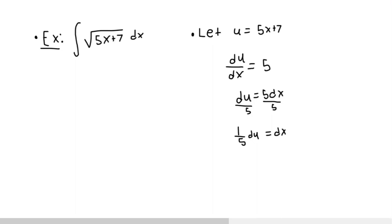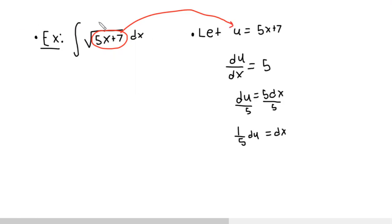Let me show you why I did that. I said you want to get all of these x's gone and replaced with u's. You can see that this 5x plus 7 is just u — I said let u equal 5x plus 7, so that's taken care of. And then this dx — I said dx is 1/5 du. All of the x's and dx's must be replaced with u's and du's. So this works too.